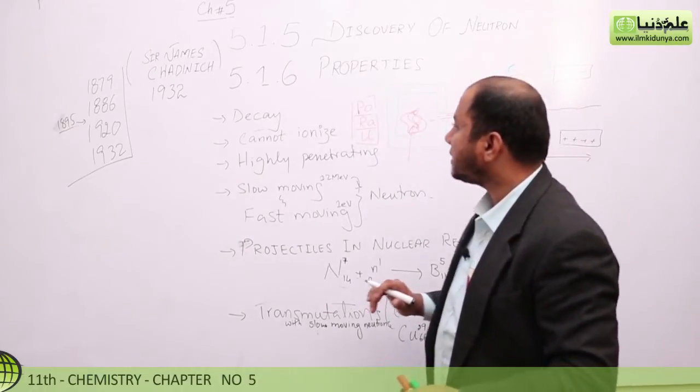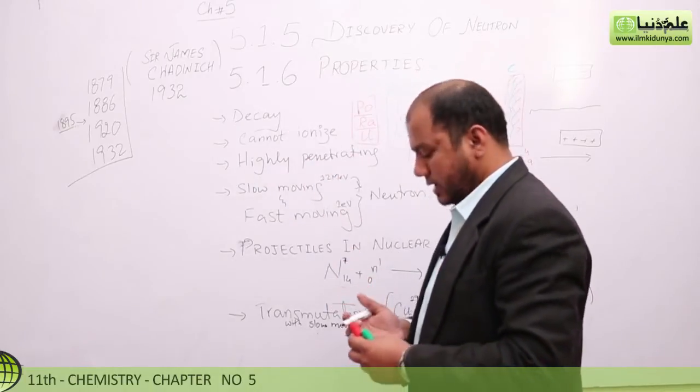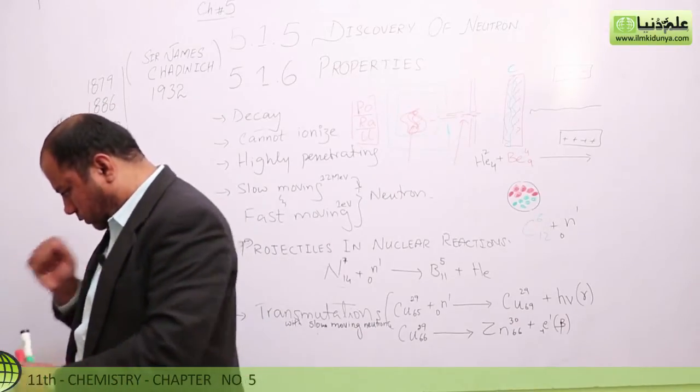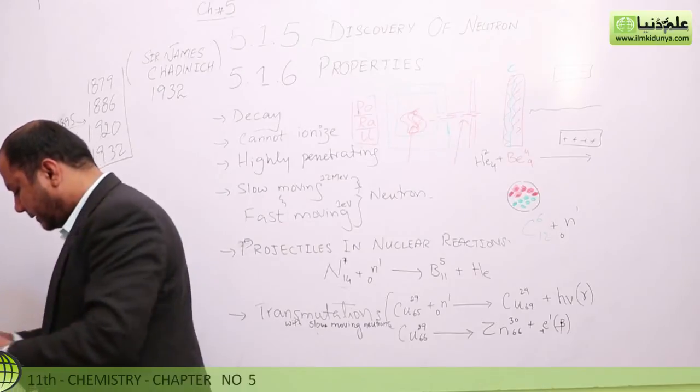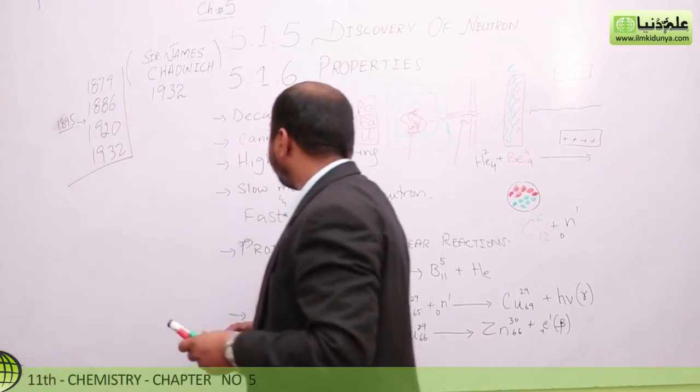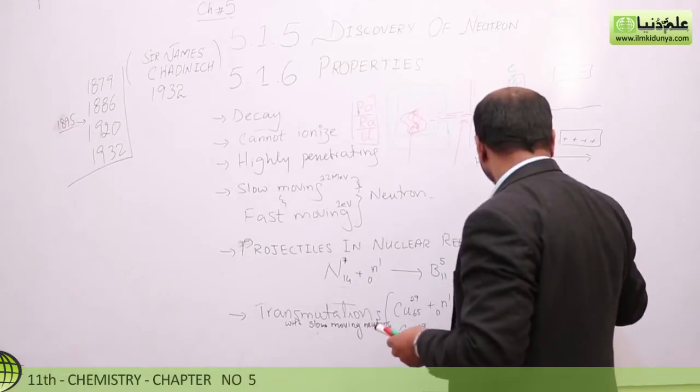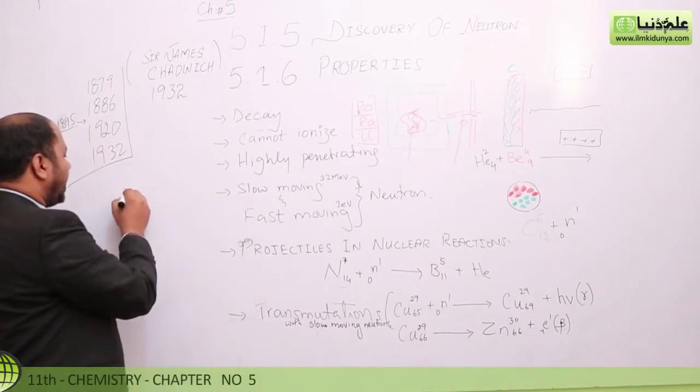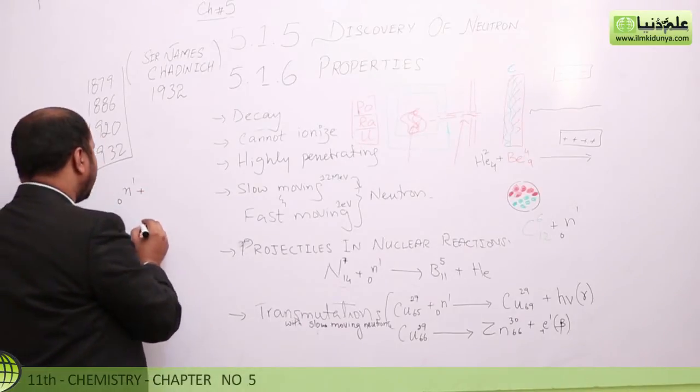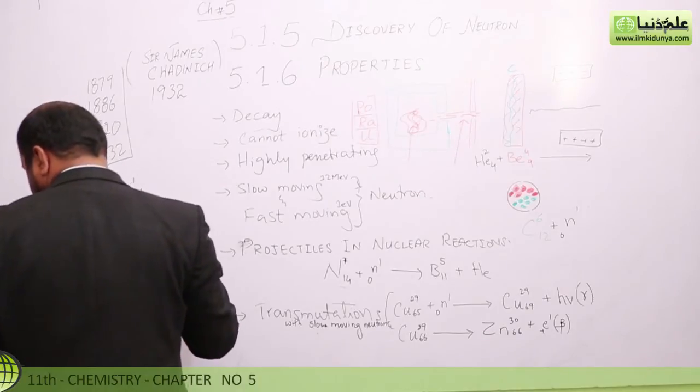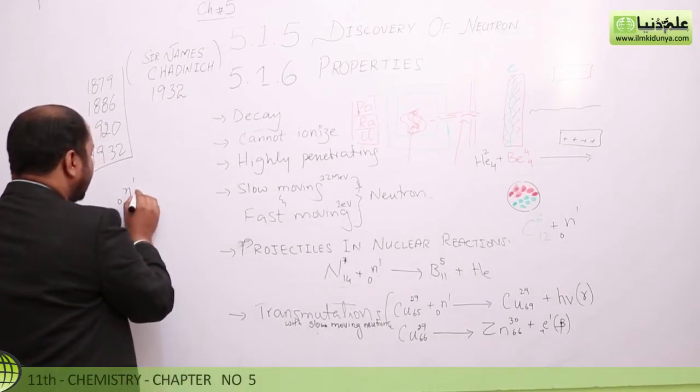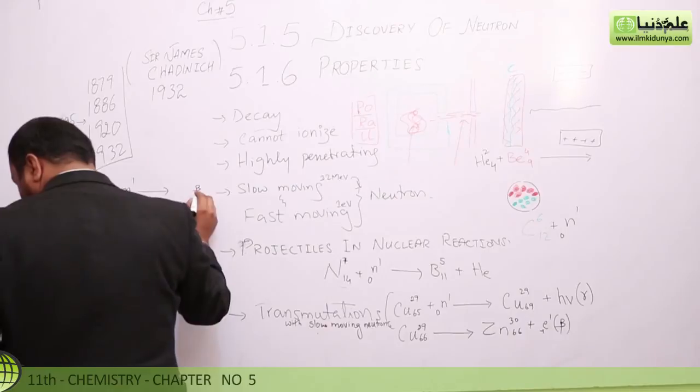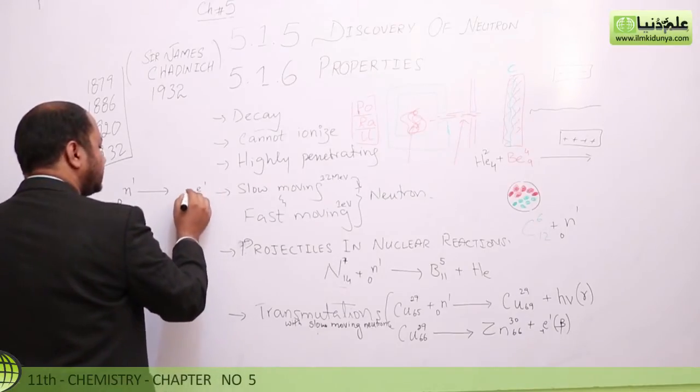Let's talk about properties now. In properties you can say the neutron has this property: the neutron can turn down into a proton. How? If we remove one particle from the neutron, let's say that is a beta particle, if you remove a beta particle from it, it will turn into a proton. Look at that, neutron, if a beta particle is removed, it will turn into a proton. That is how you can say the neutron can decay. They can really turn into another particle. This property exists in them.